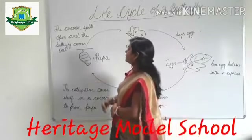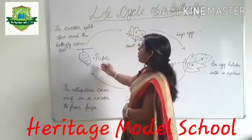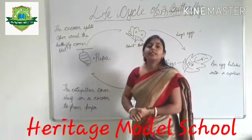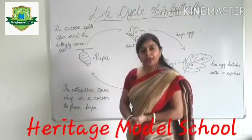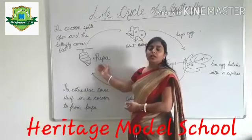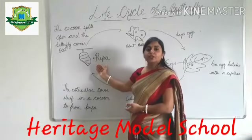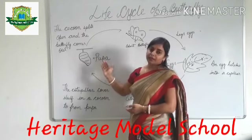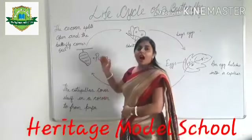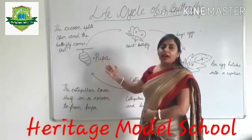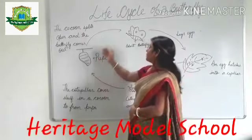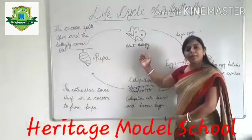The cocoon splits open and becomes a butterfly in seven days. After becoming a cocoon, it takes seven days to become a butterfly. And after breaking, it transforms itself to become an adult butterfly.